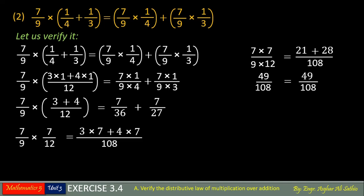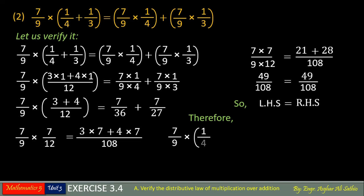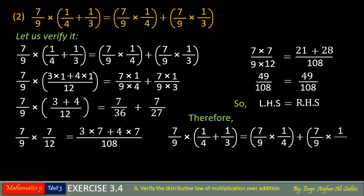So here 7 and 7 — both numerators multiplied each other: 7 into 7, and 9 into 12. Multiply these values, so 108 will be the LCM. 3 into 7 will be 21 and 4 into 7 will be 28. So 7 into 7 is 49, 9 into 12 is 108. 21 plus 28 will be 49 and 108 will be the same. Here you may see both left hand side and right hand side are equal, so left hand side is equal to right hand side. Therefore we can say 7 upon 9 into bracket 1 upon 4 plus 1 upon 3 bracket close equals 7 upon 9 into 1 upon 4 plus 7 upon 9 into 1 upon 3.